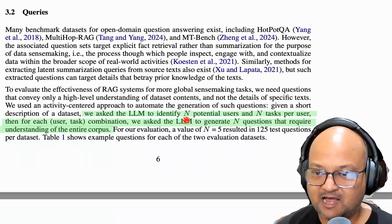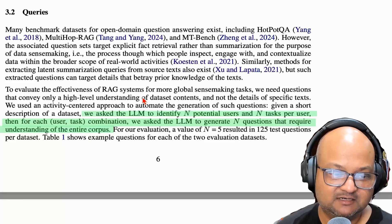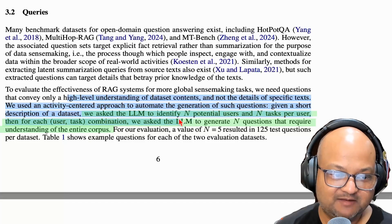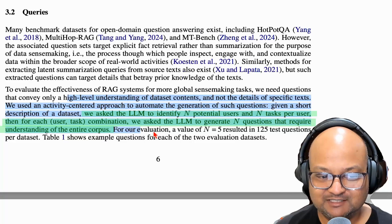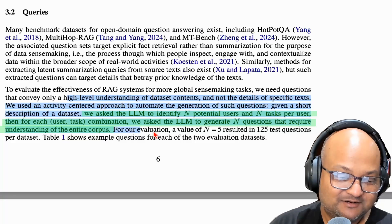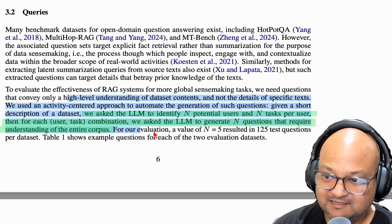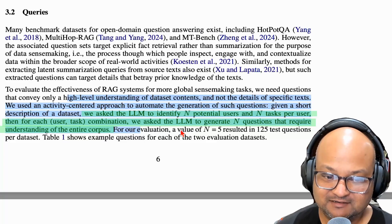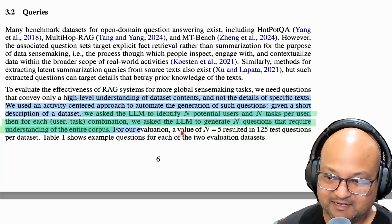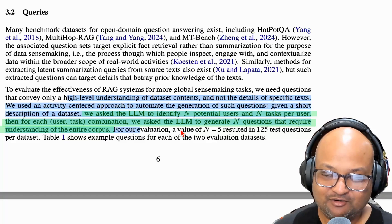The question then becomes: how do you generate questions that exercise this kind of global understanding? Once again, they used an LLM to generate questions that require understanding of the entire corpus. This paper is a great illustration of the idea now common in LLM research — whenever you run into a problem of how to do something, the first answer is: let's ask the LLM. Here they use LLMs to extract concepts, extract connections between them, summarize those concepts, summarize them one level higher, and also generate their test evaluation questions.